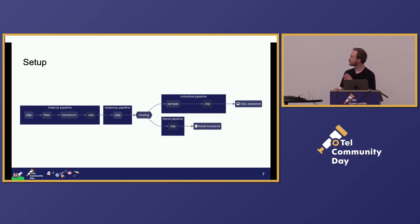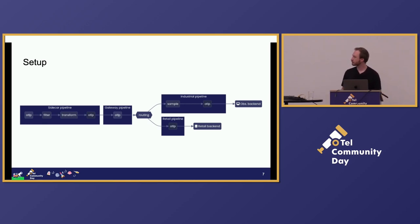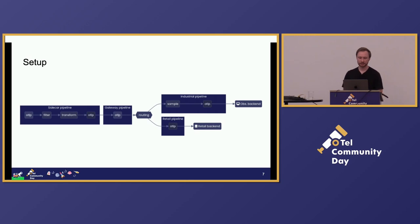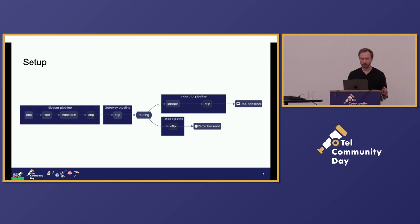So if you look at this setup here, this is basically a pipeline diagram model for a single region for what this would look like inside of the collectors that we've configured. So basically, data comes in through OTLP, is processed in the sidecar in the filter and transform processors, and then is sent on to the second collector, which determines where the data needs to go using the routing connector. And then finally, it samples with the tail sampling processor for the data that ends up in the company-wide backend.